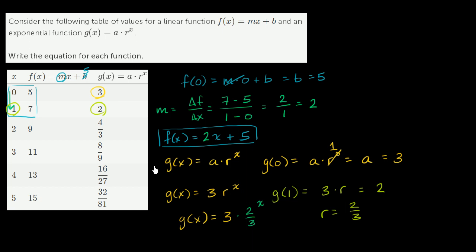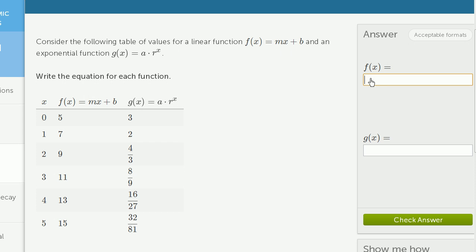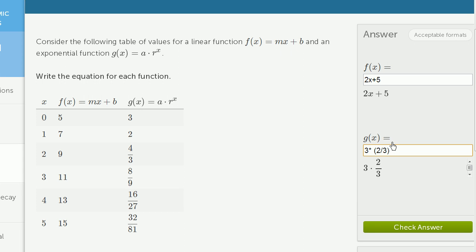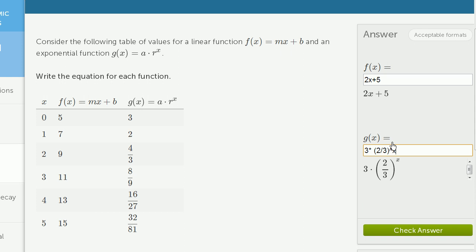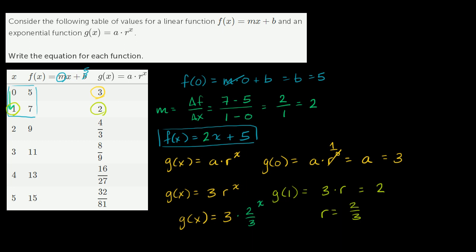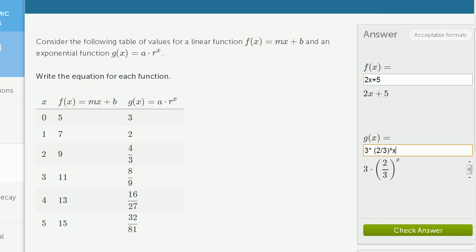Let's actually just type that in. So f(x) is 2x plus 5, and we can verify that that's the expression that we want, and g(x) is 3 times 2 over 3 to the x power. Let me just verify that that's what I did there. All right, yeah, that looks right. Let's check our answer, and we got it right.